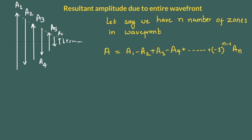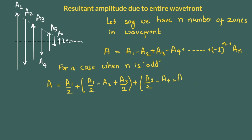Let us first consider case for odd number of zones. For mathematical simplicity we can write odd number of zones as half that is a1 as a1 by 2 plus a1 by 2, a3 as a3 by 2 plus a3 by 2 and so on. Since number of zones are odd the last term would be an by 2.